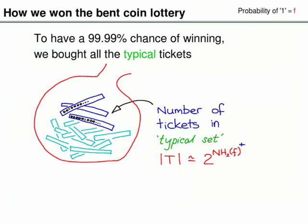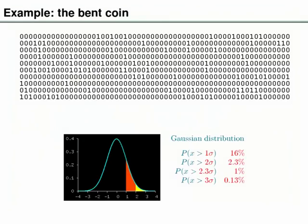The number of tickets in the bag is 2 to the nH plus a little bit, due to fluctuations around the mean of the typical number of 1s. Those fluctuations go as square root of n, where n is the length of the string, so they get relatively small compared to the main term nH. You can get the probability of failure as small as you like just by adding a few extra square root of n standard deviations to your typical set.